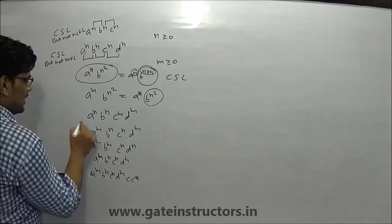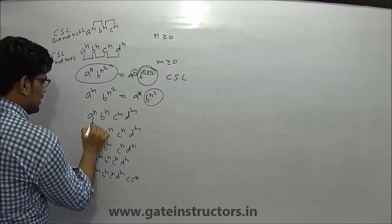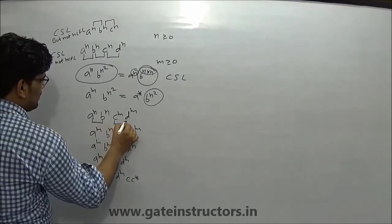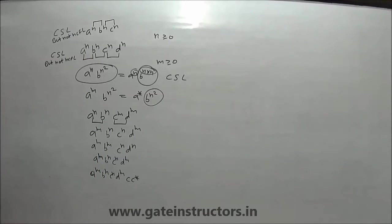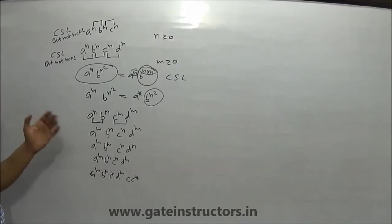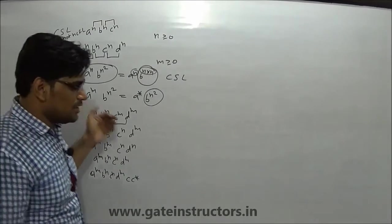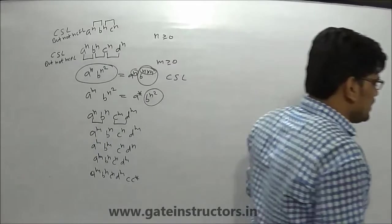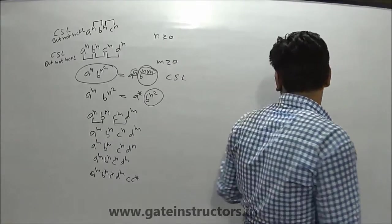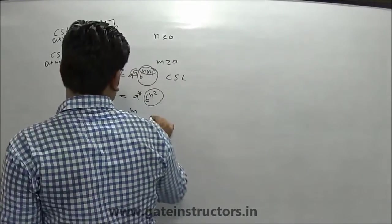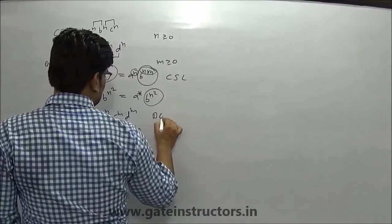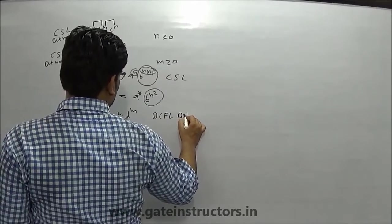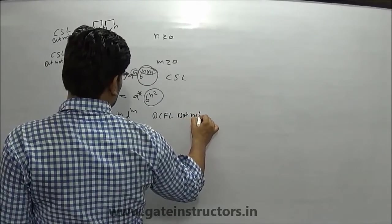Now, let's look at this language. Here you can see one comparison. One comparison is here and one comparison is here. But at a time, one comparison is here. Total here are two comparisons, but at a time one comparison is here. And the push and pop is here. So, this language will be DCFL.